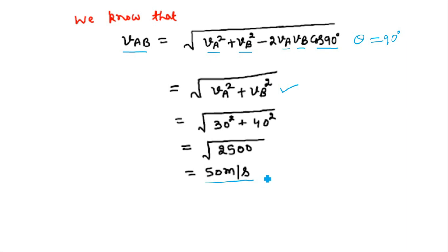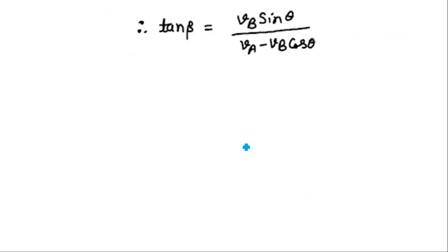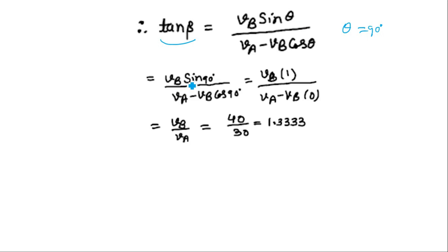Let us now find the direction of the relative velocity. We already supposed that the angle which VAB makes with VA is beta. By standard result, tan β equals VB·sin θ divided by (VA minus VB·cos θ). Since θ equals 90°, sin 90° is 1 and cos 90° is 0. Therefore tan β equals VB upon VA, and putting in the values — 40 upon 30 — that gives 1.3333.